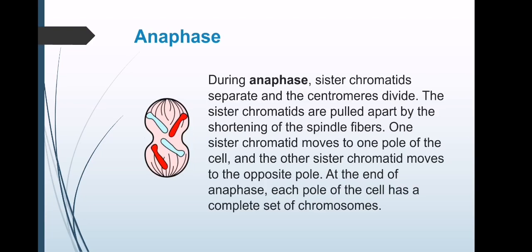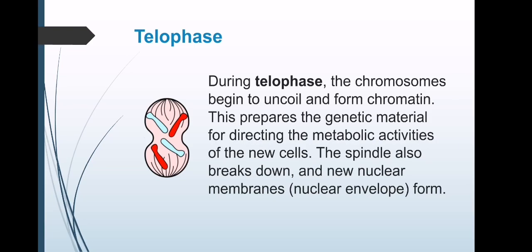Anaphase: In anaphase, the sister chromatids separate from each other and are pulled towards opposite ends of the cell. As the chromosomes separate completely into two sets, one at each pole, anaphase is considered complete. Telophase: The daughter chromosomes arrive at the poles and the spindle fibers that have pulled them apart disappear.